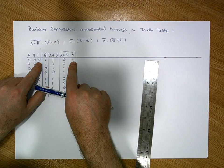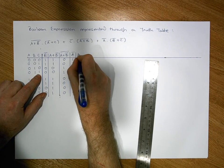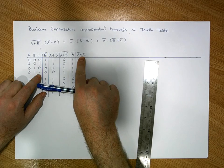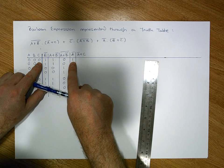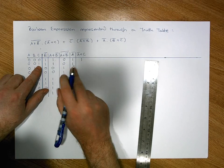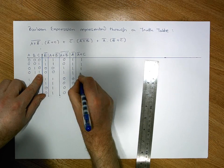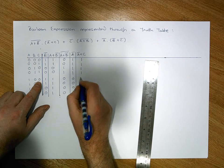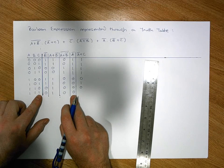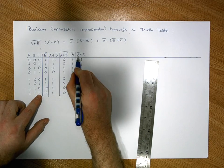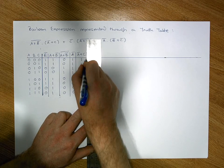We OR the Ā values with the C column. An OR only gives us zero when both inputs are simultaneously zero. Going down: not simultaneously zero → 1; not simultaneously zero → 1; not simultaneously zero → 1; not simultaneously zero → 1; simultaneously zero → 0; not simultaneously zero → 1; simultaneously zero → 0; not simultaneously zero → 1. That gives us our Ā OR C values.